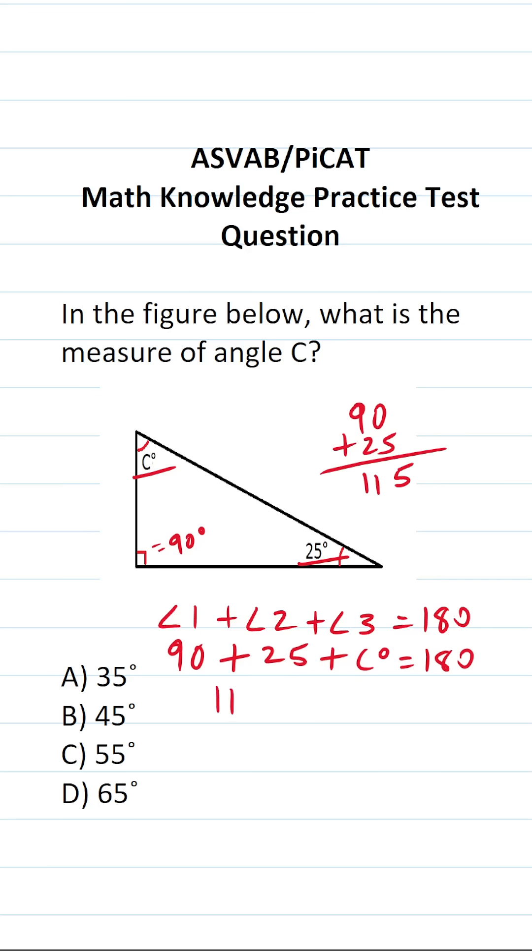So this says 115 plus angle C is going to equal 180. We can solve for angle C by subtracting both sides of this equation by 115. This crosses out. This says C is going to be equal to 180 minus 115.